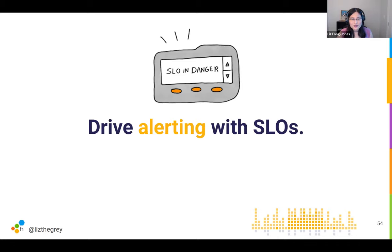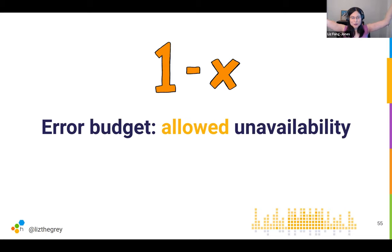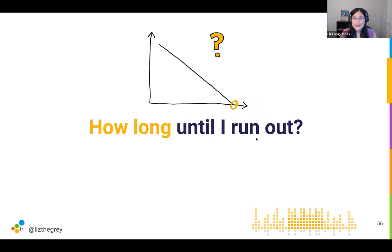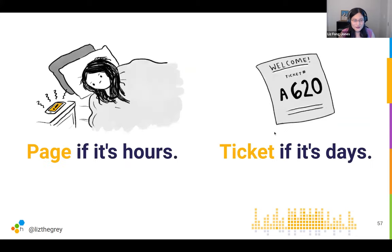We don't just put the SLO up on a wall and look at it every couple of months — we can use SLOs to replace all those noisy alerts. If we define what's acceptable enough for our users — say 99.9% of requests served successfully, meaning one in a thousand is allowed to fail — and I'm serving 100 million requests per month, that means 100,000 can fail. If I'm having 100 bad requests per hour, that'll take 1,000 hours to run out — not an emergency. But if I'm having 10,000 bad requests per hour, I'll run through my entire monthly error budget in less than 10 hours — someone needs to wake up and deal with that.